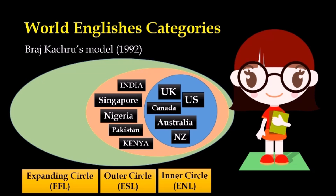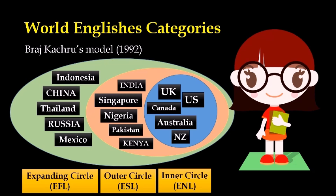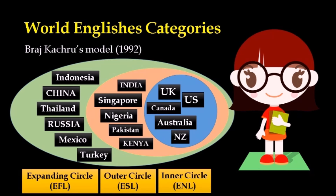The last circle is the expanding circle. This is the biggest circle in Kachru's model. This circle belongs to countries which use English as a lingua franca — in other words, a language that is used between speakers whose native languages are different. English in this circle can also be called English as a foreign language or EFL. Indonesia is a part of this circle, along with China, Thailand, Russia, Mexico, Turkey and many more.